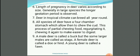Deer in tropical climates can breed all year around, and all species of deer have a four-chambered stomach which allows them to chew the cud. This process of partial chewing, swallowing, and re-chewing food makes it easier to digest. A male deer is called a buck, but some larger males are called stags. A female deer is called a doe or hind, and a young deer is called a fawn.